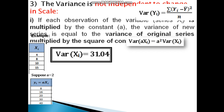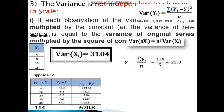The variance formula is: summation of (yi minus y-bar) squared divided by n. y-bar equals sum of yi divided by n, which is 114 divided by 5, equals 22.8. Computing (yi minus y-bar) for each value and summing the squared deviations gives 622.8.